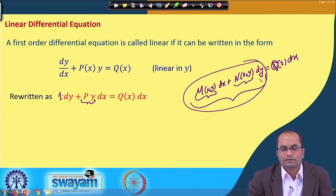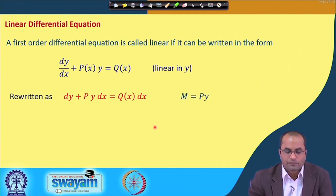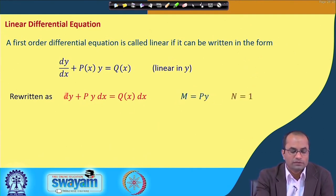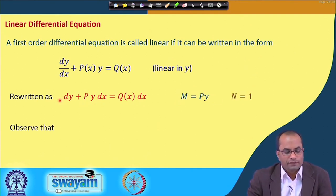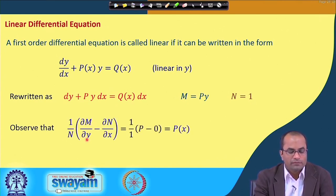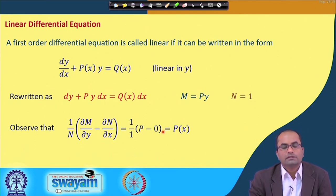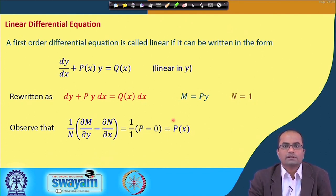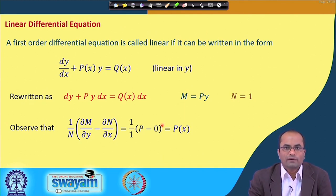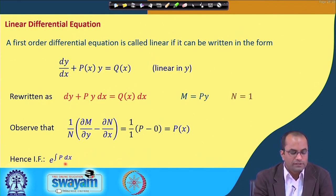Here M = P·y and N = 1. If we compute (1/N)(∂M/∂y - ∂N/∂x), we get just the function P, which is a function of x alone. So we can apply the earlier idea: when this expression is a function of x only, the integrating factor is e^(∫P dx).